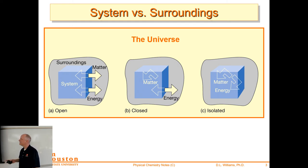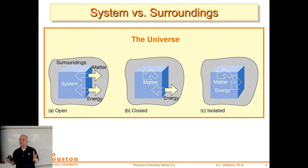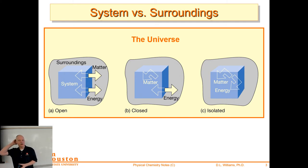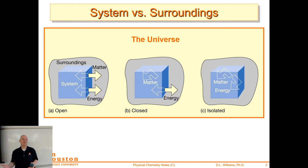So that's a closed system. An isolated system is one where both matter and energy are contained — they can't leave. That would be an insulated, sealed container. If it's isolated, you can't really communicate with it — energy in and out is the way we communicate with systems. We put energy in to affect them, or we measure the energy leaving them to measure temperature and those kinds of things.